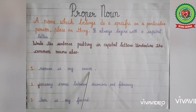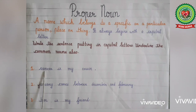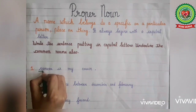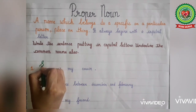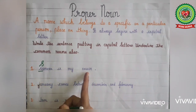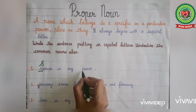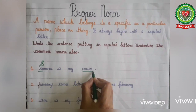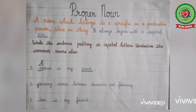Samir is the name of a particular person, so it is a proper noun — we will make the first letter capital. Read the sentence again: 'Samir is my cousin.' Cousin is the name of a common person, so it is a common noun — we will underline cousin in this sentence.